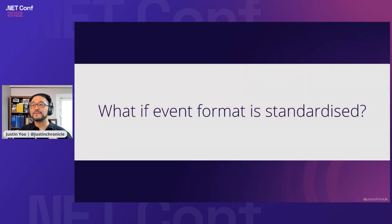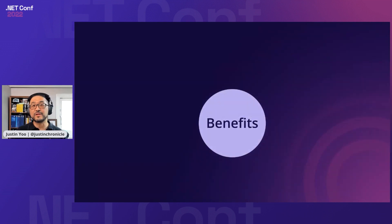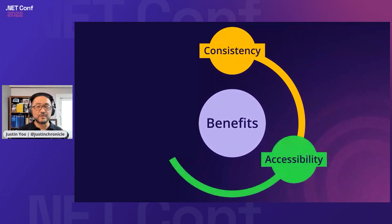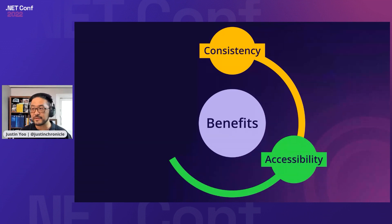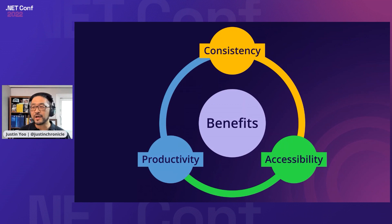So what if we had a standardized event format, so every system or device uses a common way of representing event data? That would give us three benefits. The first is consistency — we can predict what the event data looks like and handle it with minimal effort. Second is accessibility — we can build common libraries and infrastructure and deliver events across systems. And the last is productivity — we don't need to spend much time handling individual event types because they all use the same format.